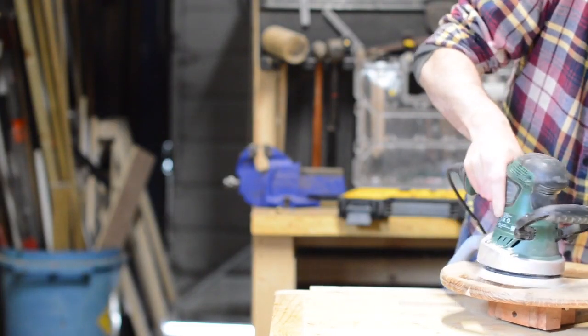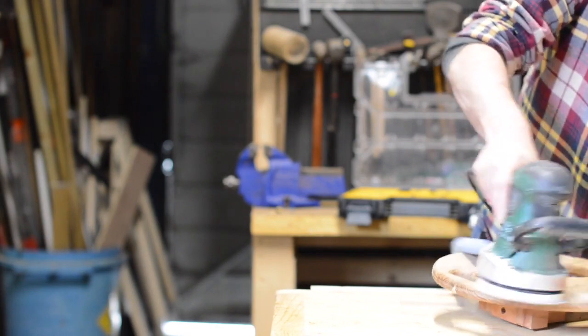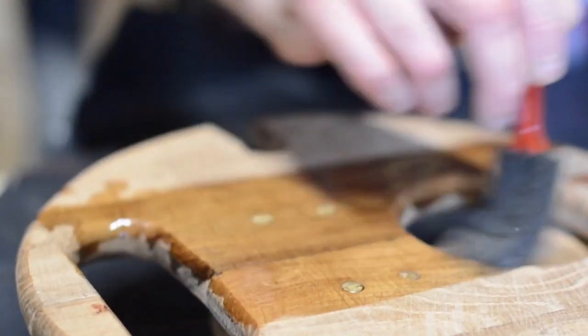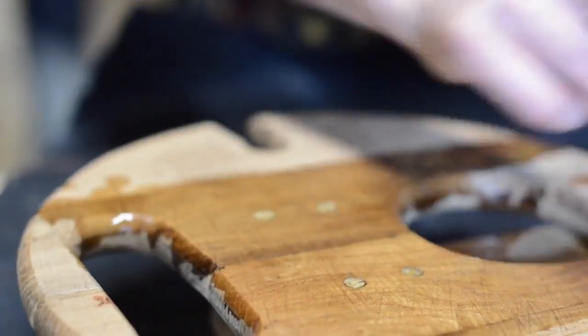I gave it all a sand working my way up through the grits until I got a nice finish, and then I could apply several coats of Danish oil. Very pleased with the color and the look of the brass.